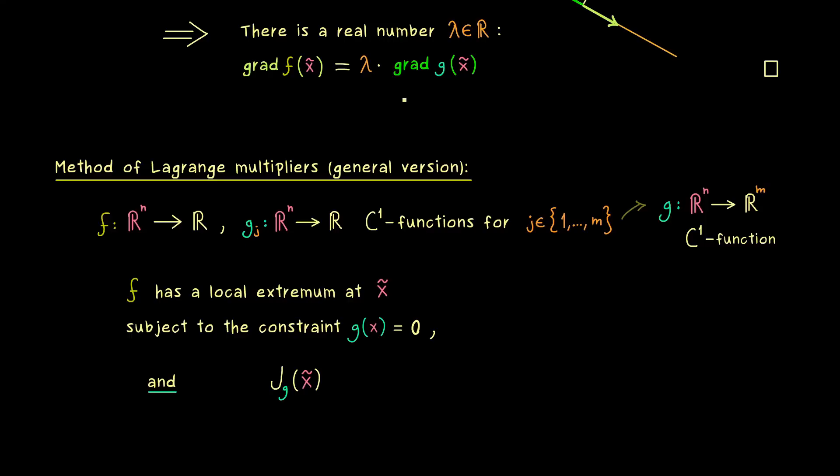And now we want, similarly to before, that these span a nice subspace in Rᵐ. So before we wanted a one-dimensional subspace. But here we need now an m-dimensional subspace. Hence we get that the rank of this Jacobian matrix should be equal to m. So you could say, we want to have the maximal rank for this Jacobian. And you should already know why we have to assume that. Because we want to apply the implicit function theorem.